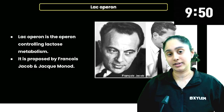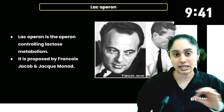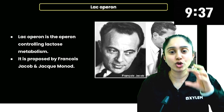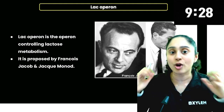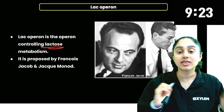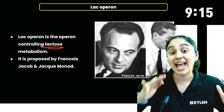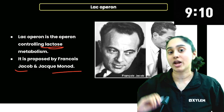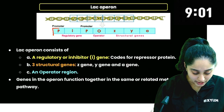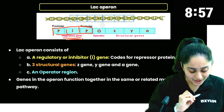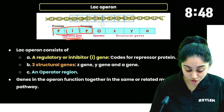So in this Lac Operon, an operon is a group of genes. Lac Operon involves lactose, which is a sugar, and its metabolism — it is a unit called the Lac Operon. This Lac Operon has a promoter region and a regulatory region. This regulatory gene produces a specific protein called the repressor protein.